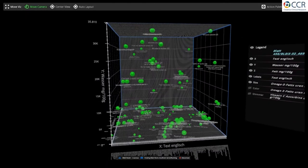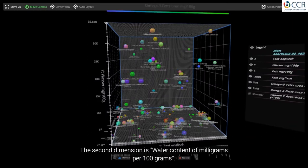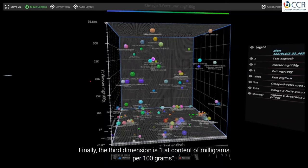The second dimension is water content of milligrams per 100 grams. Finally, the third dimension is fat content of milligrams per 100 grams.